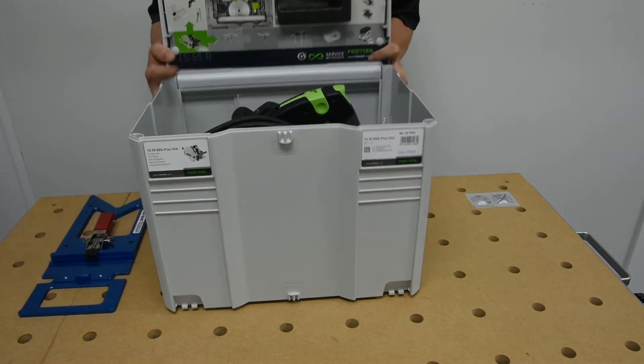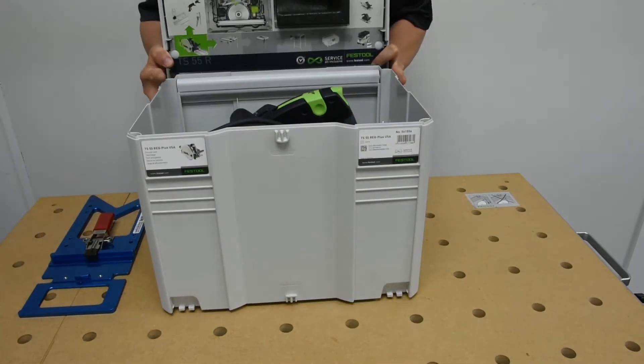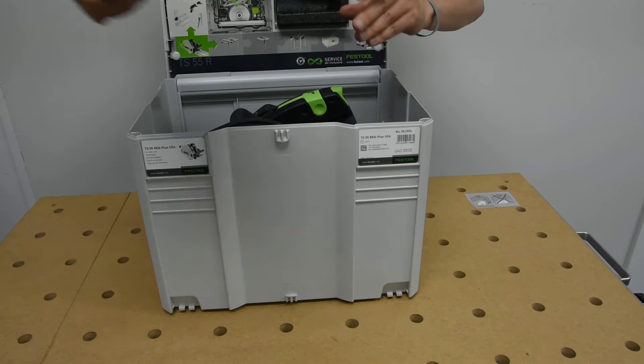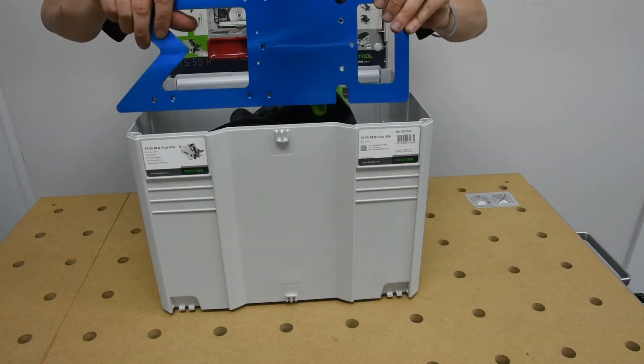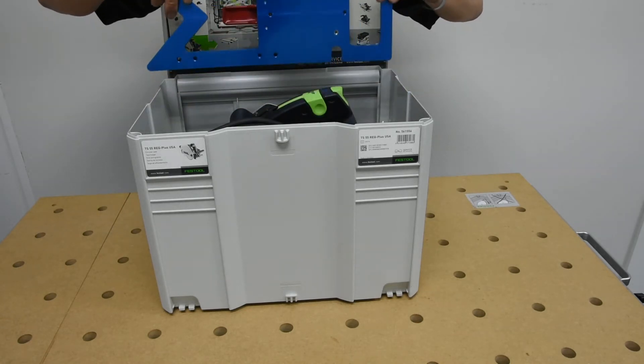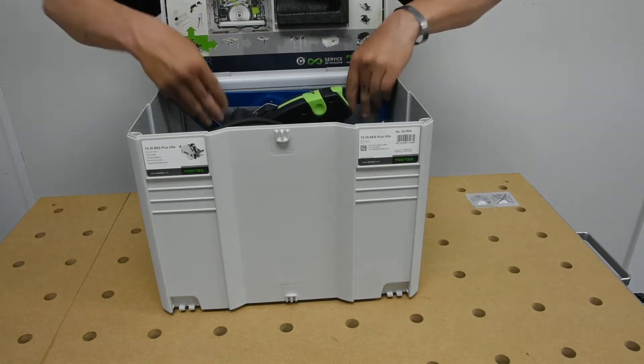We're going to take our GRS 16 and flip it upside down so the latch is now facing the back of the Systainer. Drop it in there. That's it, it's in.